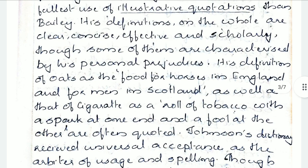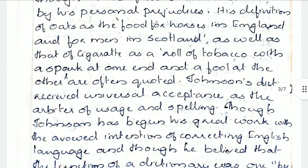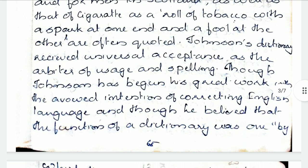His definition of oats is 'food for horses in England and for men in Scotland.' And 'a cigarette as a roll of tobacco with a spark at one end and a fool at the other' are often quoted — you might have heard that. It has got a kind of universal acceptance because of the brilliance implied into it and also the usage and the kind of spelling he used.